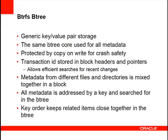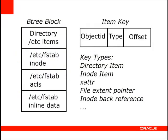The key ordering keeps related things close together in the B-tree — important for lookups, so things related to a file are right next to the inode. Inside a single block, you might find directory items for /etc, the inode for /etc/fstab, access control lists, and even inline data containing the file itself if it's very small — all packed together. Each key has three different parts that mean different things depending on what you're looking up, allowing very efficient packing.